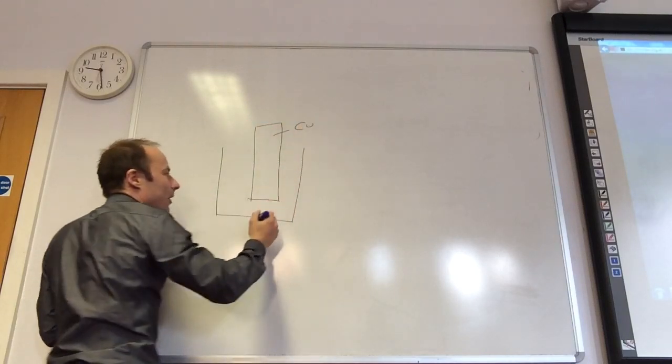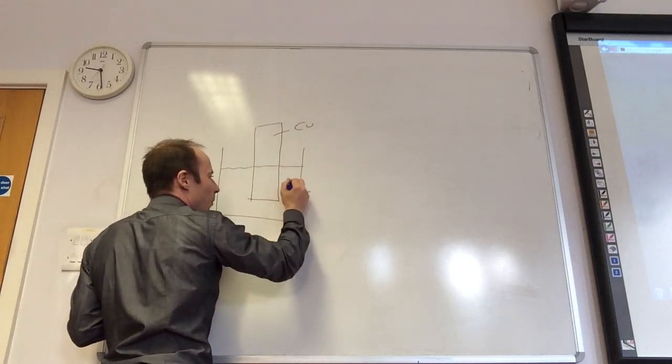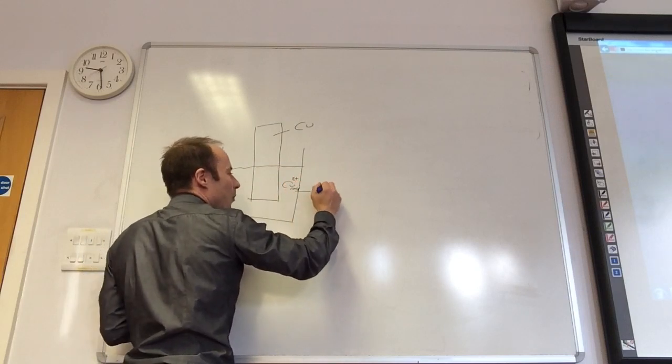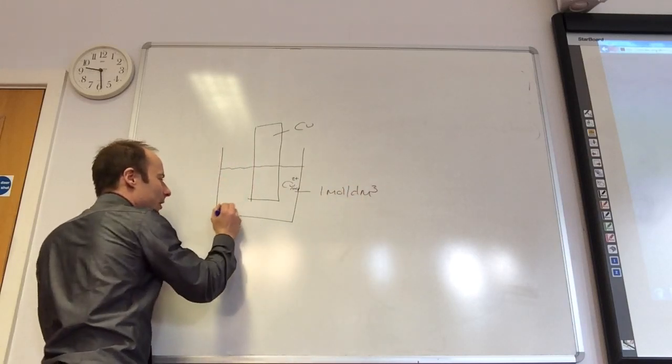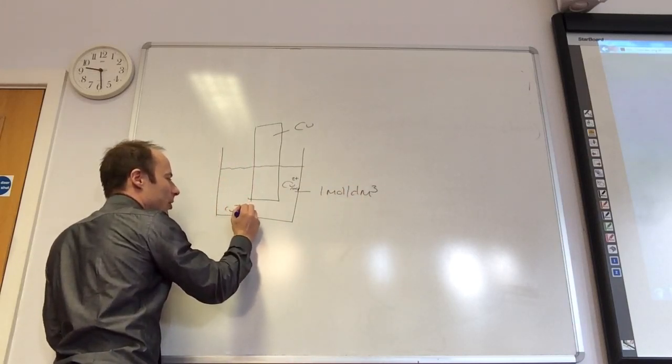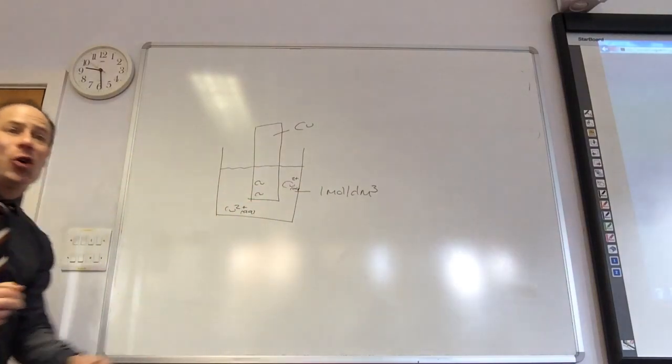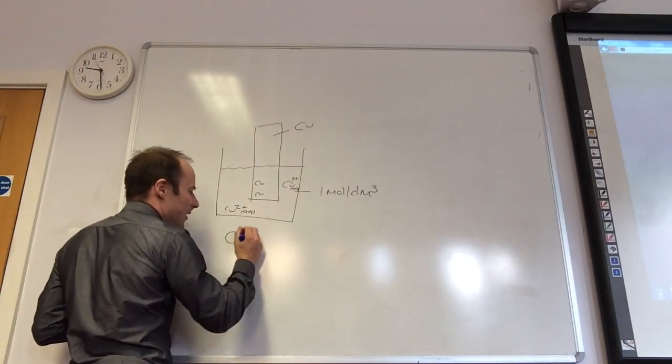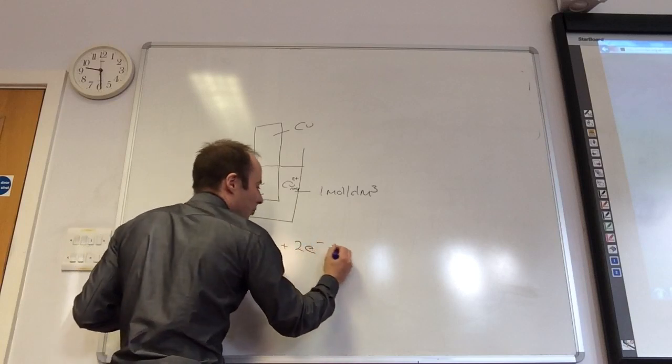Into it goes a piece of copper. So that's copper. In my solution there will be copper 2+ aqueous, one mole per decimeter cubed. I've got lots of copper 2+ ions and copper. We always write the equilibria with the most oxidized species on the left hand side.